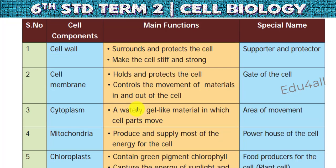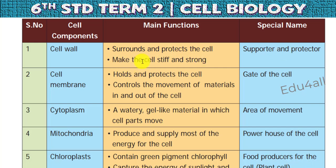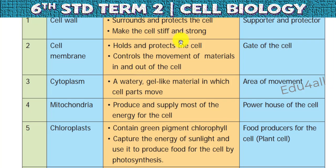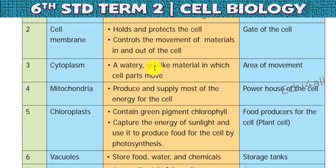Now we can see cell organelles and their main functions. First is cell wall — it is just like a gatekeeper which protects our cell, makes cells stiff and strong, giving support and protection. It is present only in plant cells. Next is cell membrane — it is a universal membrane acting as a gate for the cell, which protects the cell and controls the movement of material in and out of the cell. Cytoplasm is a watery, jelly-like structure — just like a room — where all the cell organelles are present. It is an area of movement.